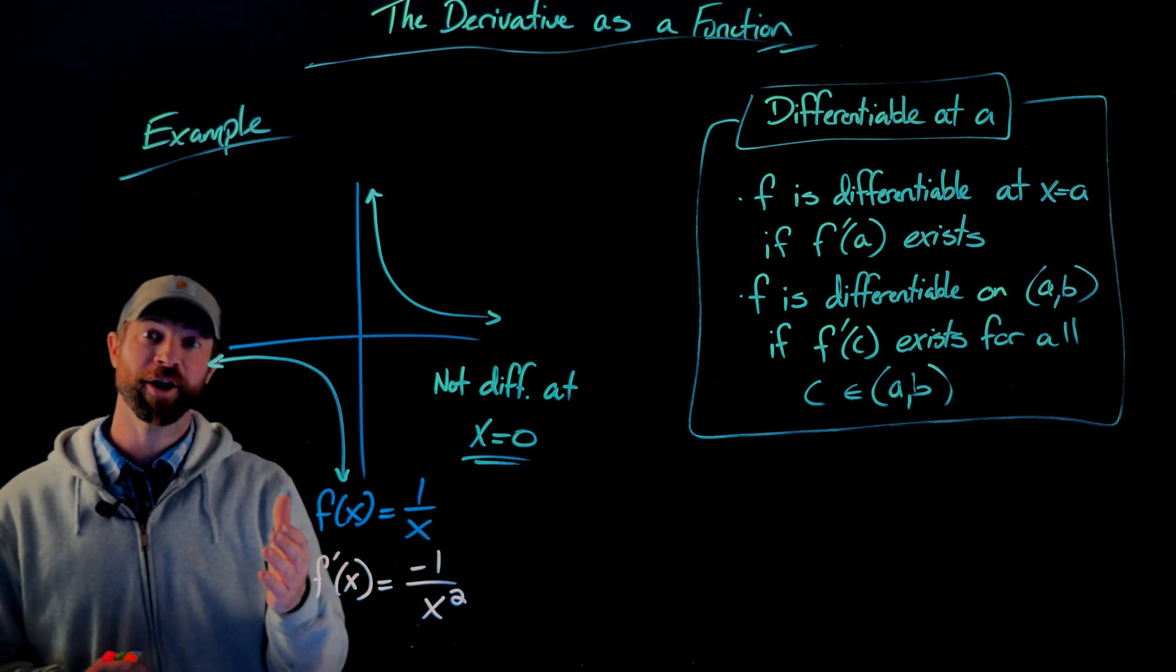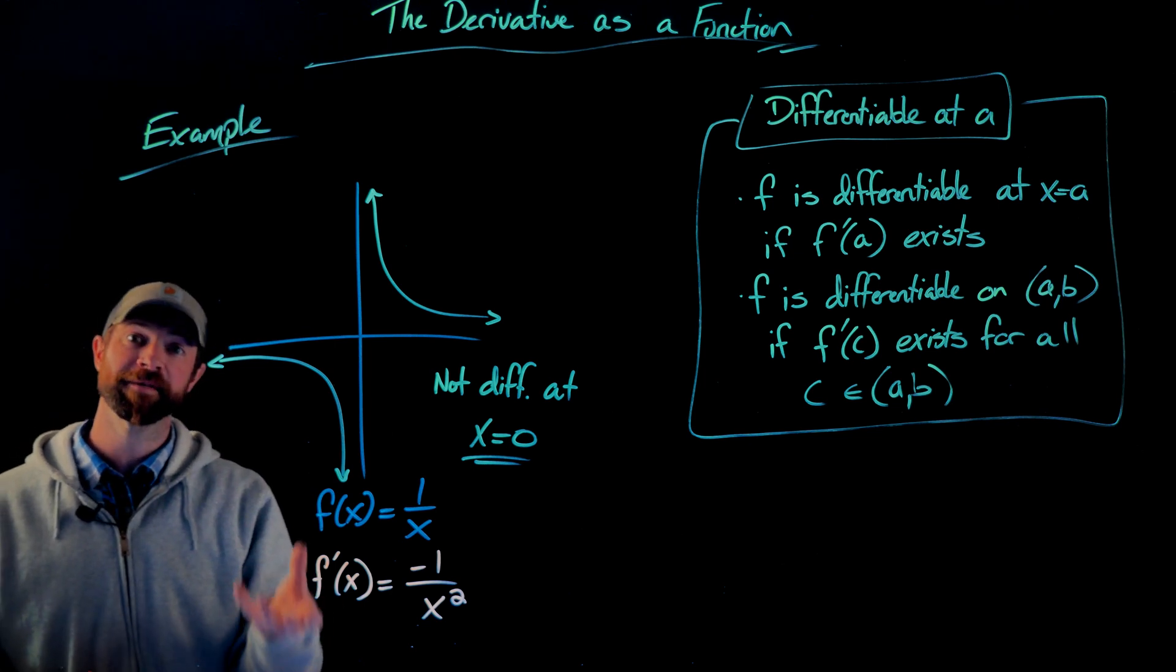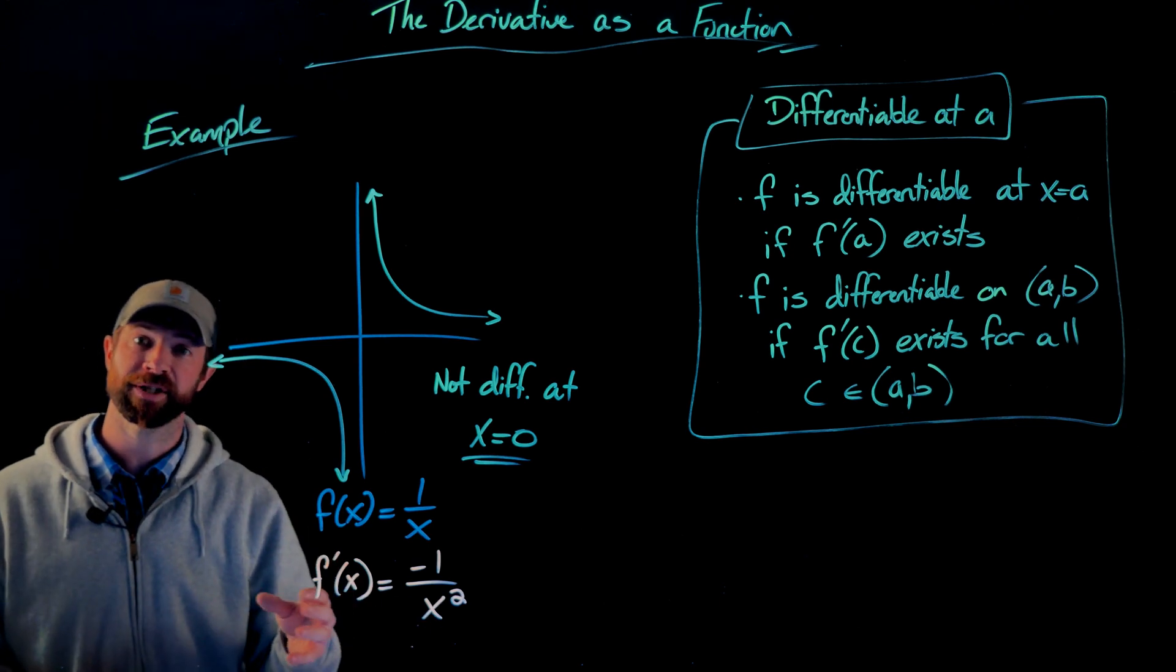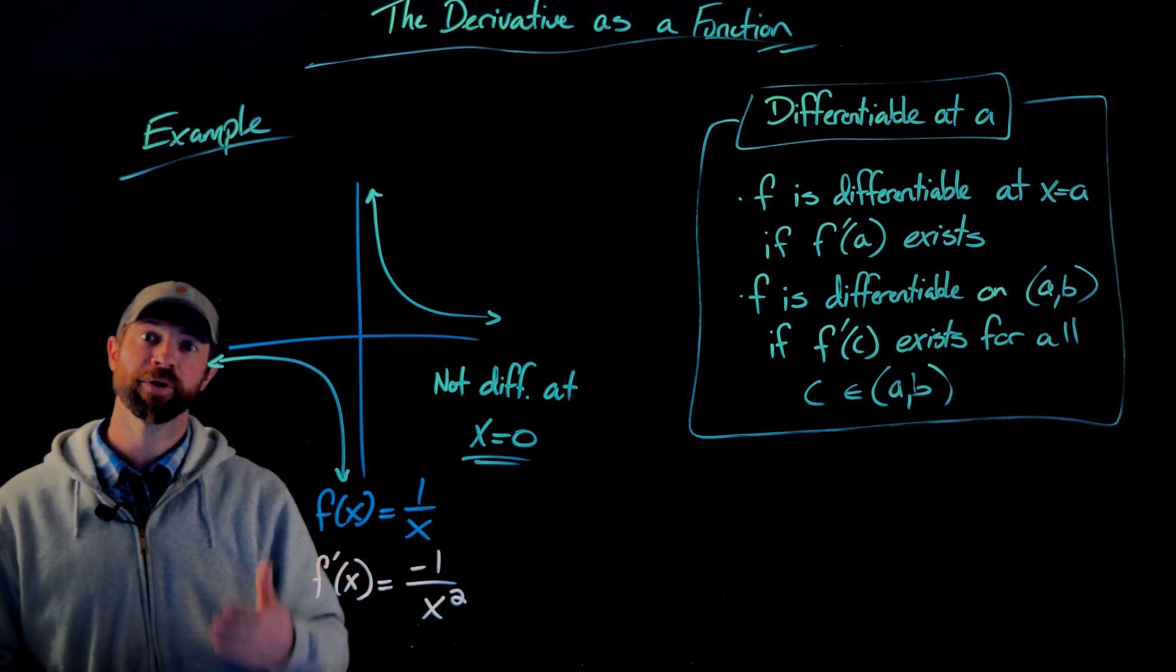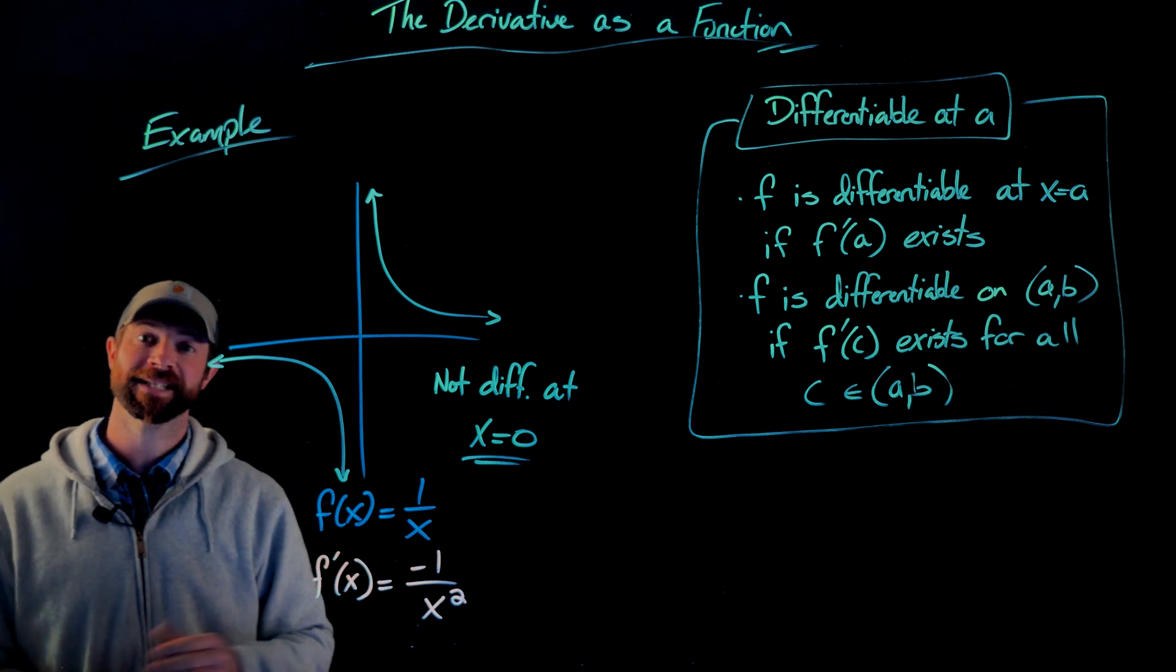The second way to argue that it's not differentiable is if we look at here. I provided the first derivative of one over x. And if we try to plug in a zero here, we'll get a division by zero. So since we can't compute the first derivative of our function at x equals zero, we would say it's not differentiable.